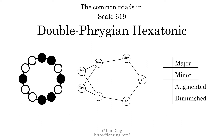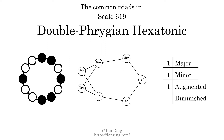Here are the common triads present in this scale. The diagram in the center is a graph of parsimonious voice leading between triads. There is one major triad, one minor triad, one augmented triad, and four diminished triads.